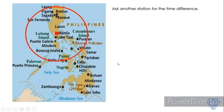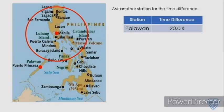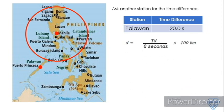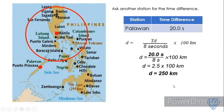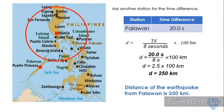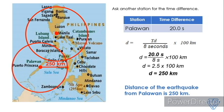So we need to ask another station for its time difference. We have Puerto Princesa, Palawan as our next station. Palawan reported a time difference of 20.0 seconds. Using the same formula, D = (20.0 / 8) × 100, we get D equal to 250 kilometers. Therefore, the distance of the earthquake from Palawan is 250 kilometers. We draw a circle with a radius of 250 kilometers around Palawan. Where these two circles meet or intersect is the earthquake epicenter.